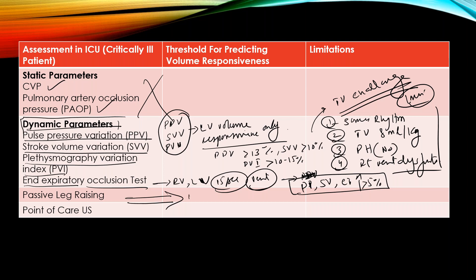What you do is have the patient lying supine, then lift both legs to 45 degrees for about one to three minutes. If pulse pressure, stroke volume, and cardiac index increase by 12 to 15%, the patient is volume responsive. Limitations of passive leg raising include: massive ascites, abdominal compartment syndrome, or severe pain.